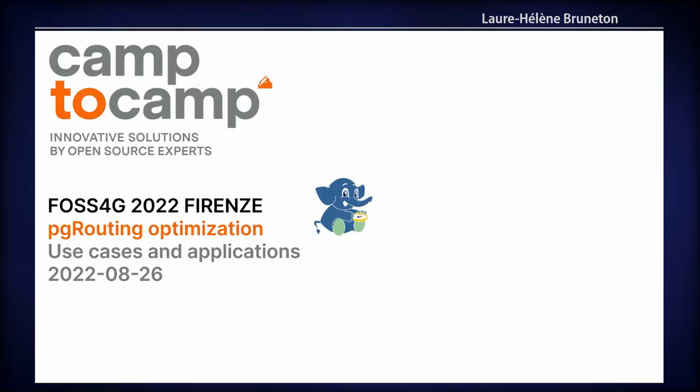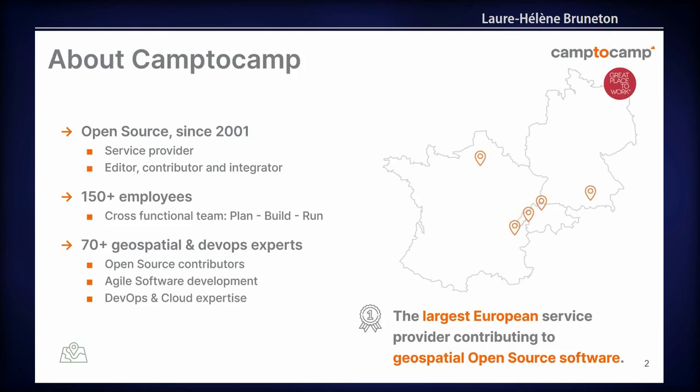Hello everyone. I'm here to present our work on some use cases we had with PG Routing. First I will present my company. I'm working for Camp2Camp. We are the largest European service provider in Geospatial Open Source software. We are working from France, Switzerland and Germany, and there are more than 70 developers in the Geospatial Department — it's really a great place to work.